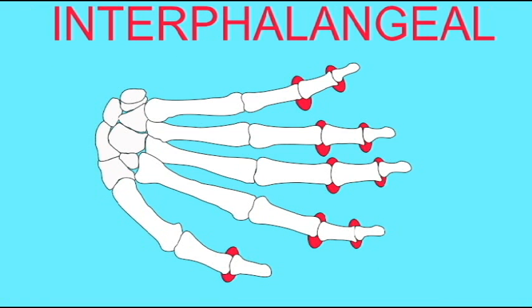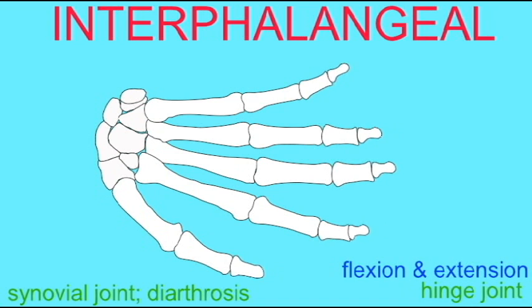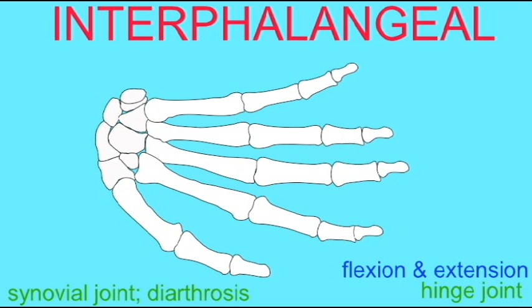The thumb possesses an interphalangeal joint between its proximal and distal phalanges. Each of the four fingers possess two interphalangeal joints: between their proximal and middle phalanges, and between their middle and distal phalanges.